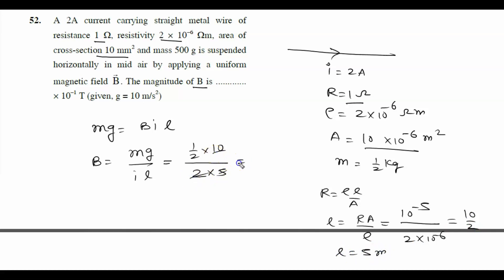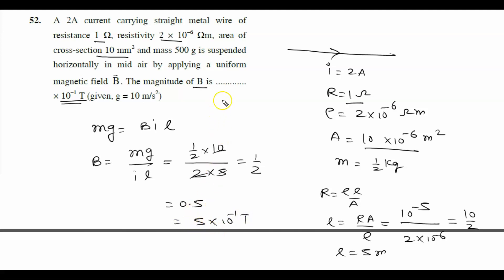Substituting L = 5 m into B = mg/(IL): the 10 from gravity and 2 from current simplify. B = (1/2 × 10) / (2 × 5) = 5/10 = 0.5 tesla, which can be written as 5×10⁻¹ tesla. The correct answer is 5.